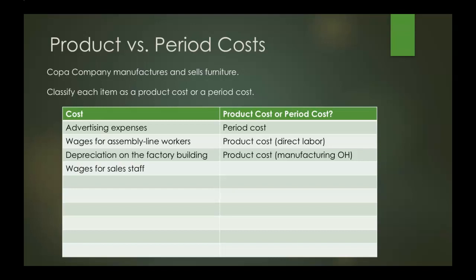Now, wages for sales staff. We saw earlier that wages for assembly line workers was direct labor because they are involved in the manufacturing process. Our sales staff are not involved in the manufacturing process, so this is going to be a period cost.